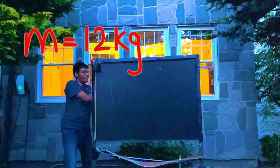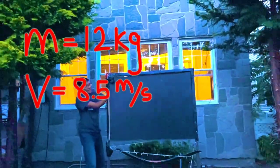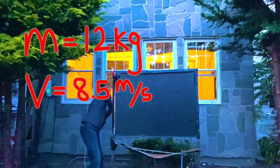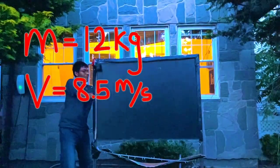So we know a couple of facts. Number one, we know the mass of my hammer is 12 kilograms. We also know that the velocity at which I throw the hammer is 8.5 meters per second and the amount of time it takes for my hammer to come to a stop is 8 milliseconds.